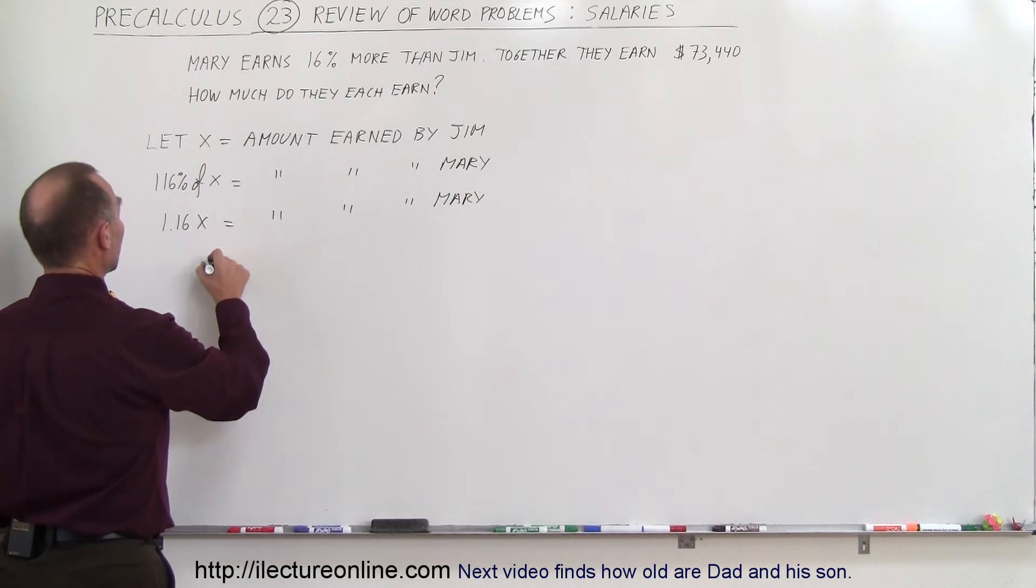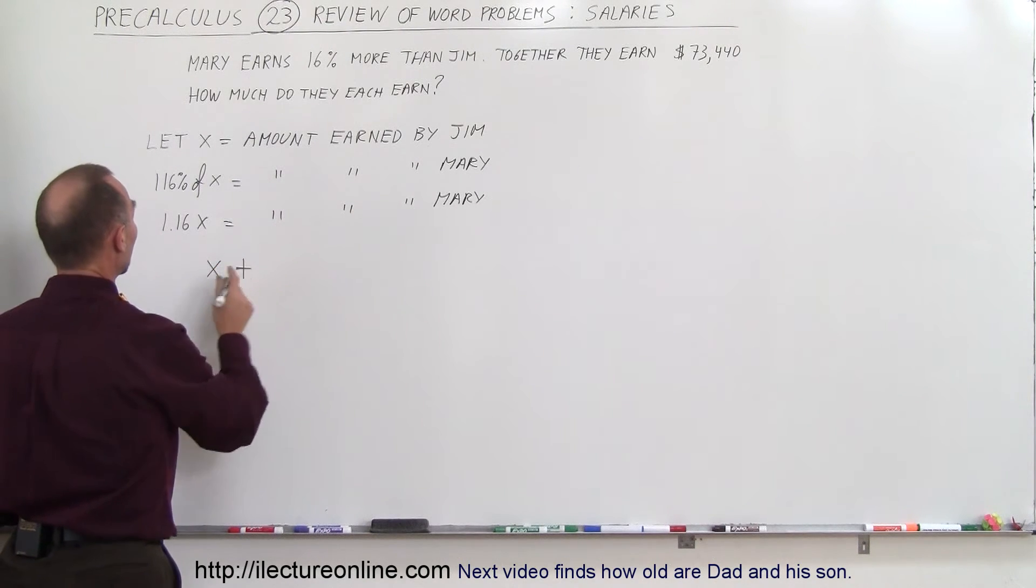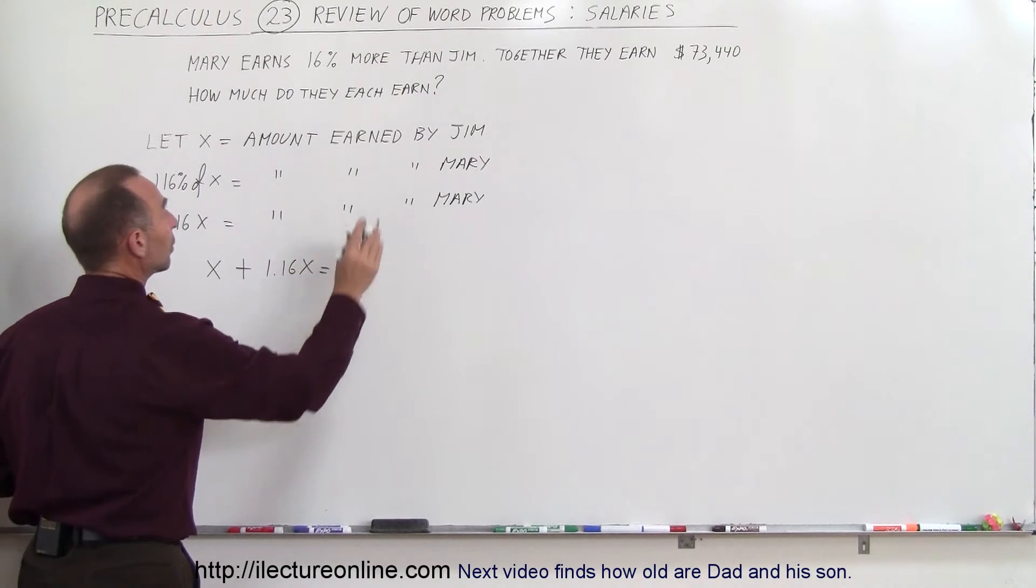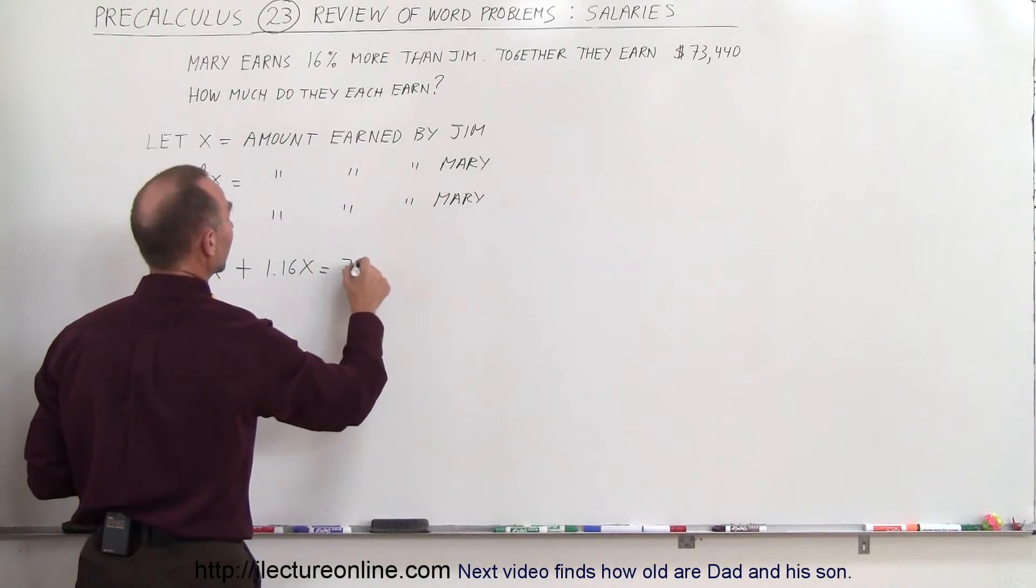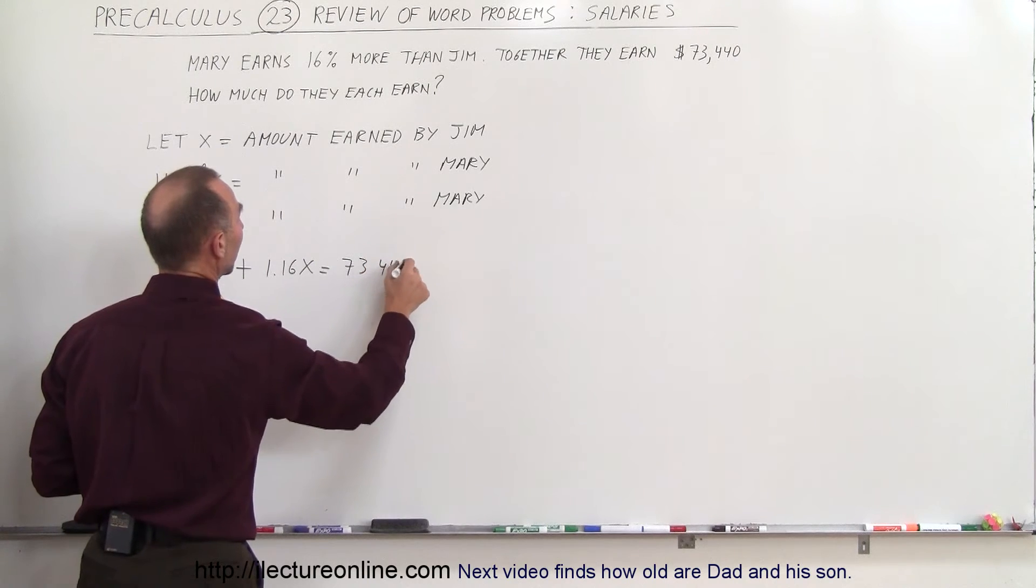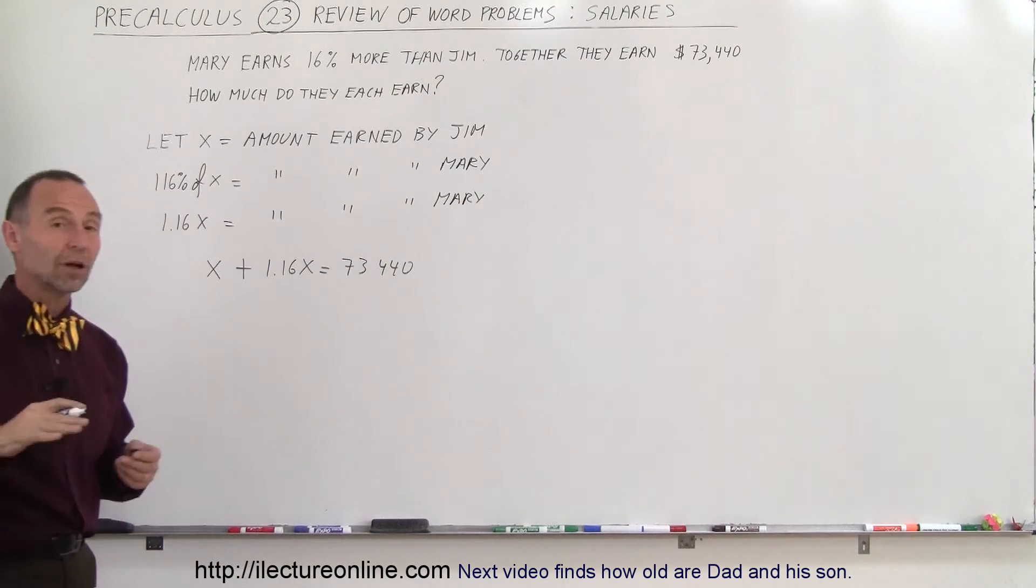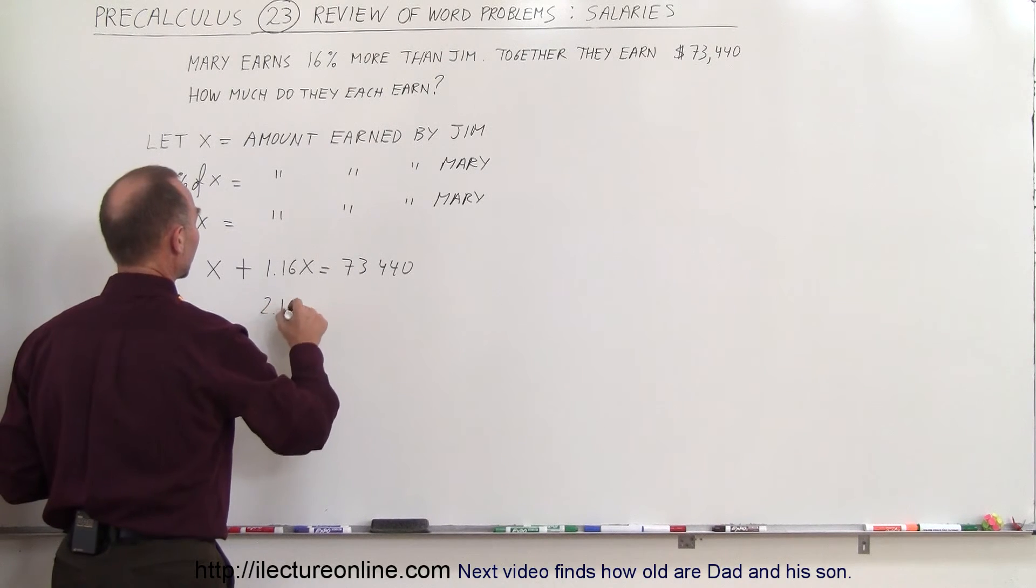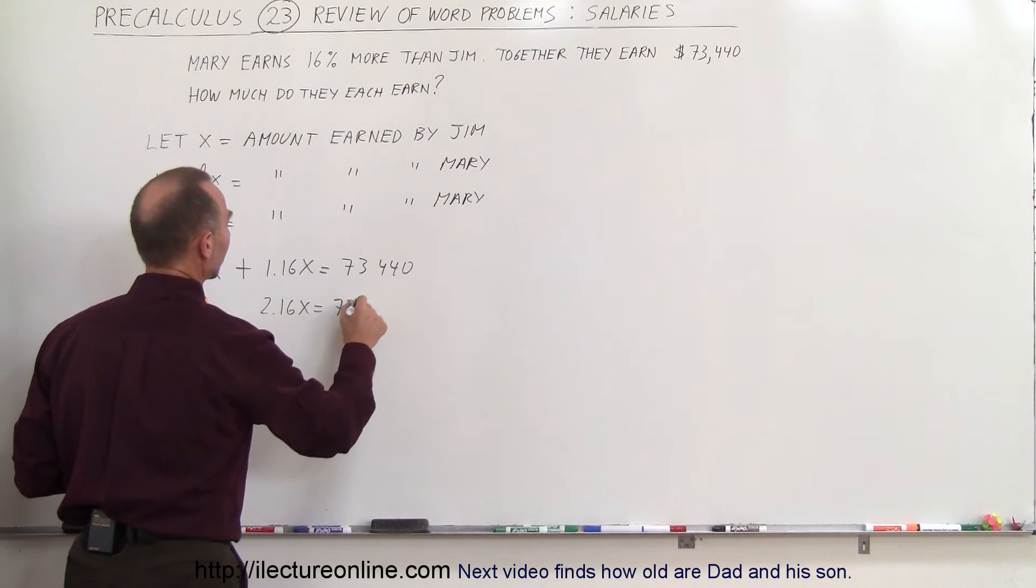So we can say that the amount earned by Jim, x, plus the amount earned by Mary, 1.16x, must equal the total amount earned, which is $73,440. All we have to do here is solve this for x, so combine the two, we get 2.16x equals $73,440.